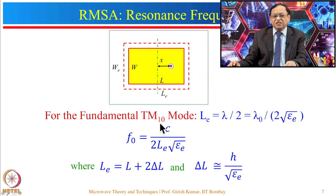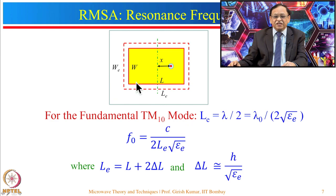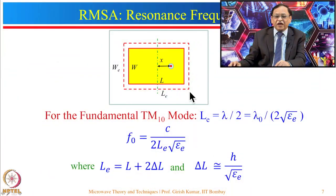For the fundamental TM10 mode, the '1' implies one half-wavelength variation along the length, and '0' implies no variation along the width. Similar to the dipole antenna whose effective length is lambda/2, the effective length Le of the rectangular patch should equal lambda/2. Since it is printed on a substrate, lambda equals lambda0 divided by square root of epsilon_e, not epsilon_r, because part of the field is in the substrate and part is in the air — so we use effective dielectric constant.